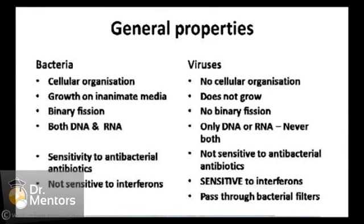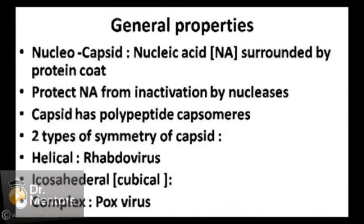Viruses, on the other hand, do not have cell organization. They do not grow on inanimate objects — they need a living cell, either an animal, tissue culture, or an embryonated egg. They do not multiply by binary fission. Importantly, they have only DNA or only RNA, never both — unlike bacteria. They are not sensitive to antibacterial antibiotics, so treatment requires antiviral drugs. They are sensitive to interferons, which are used as therapy for infections like hepatitis B and hepatitis C. Viruses can also pass through bacterial filters with a pore size of 0.2 micron.